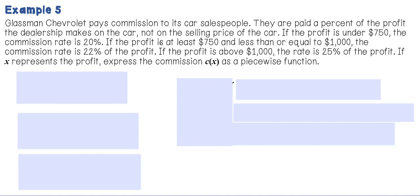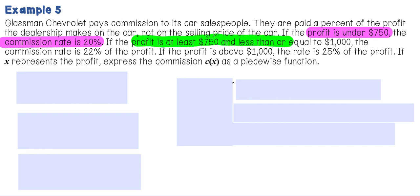Glassman Chevrolet pays commission to its car salespeople based on a percentage of the profit the dealership makes on the car — not on the selling price. If the profit is under $750, the commission rate is 20%. If the profit is at least $750 and less than or equal to $1,000, the rate is 22%. If the profit is above $1,000, the rate is 25%. If X represents the profit, express the commission C(X) as a piecewise function.